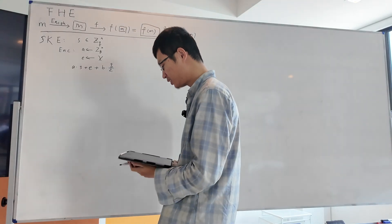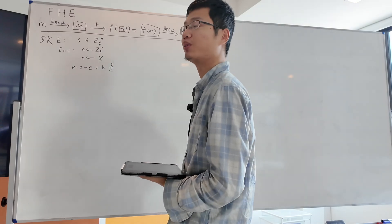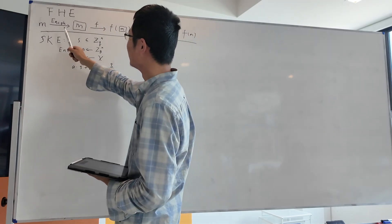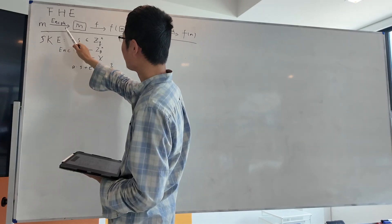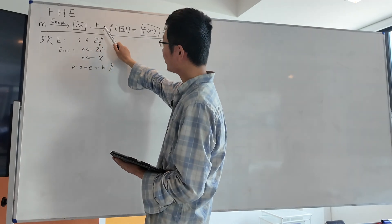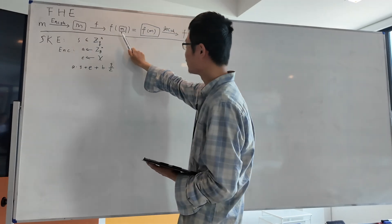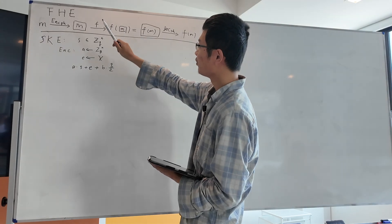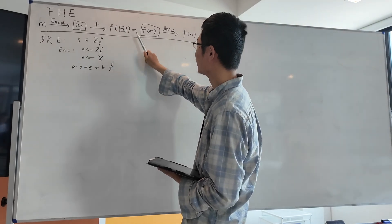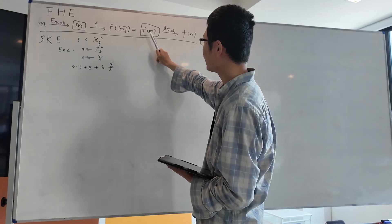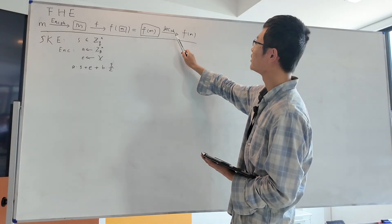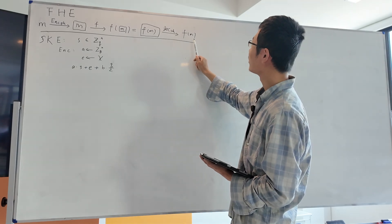Today I'll talk about another construction in lattice-based cryptography, which is fully homomorphic encryption. Fully homomorphic encryption allows the following: you have a message and you encrypt it using a public key to get a ciphertext, then you can send the ciphertext to any third party to do arbitrary computation, let's call it f, and you get a result which is f applied on the ciphertext of m. By the homomorphic property, f applied to the ciphertext equals the encryption of f applied to the plaintext. The third party sends back these results and you decrypt using your private key to obtain the final result.